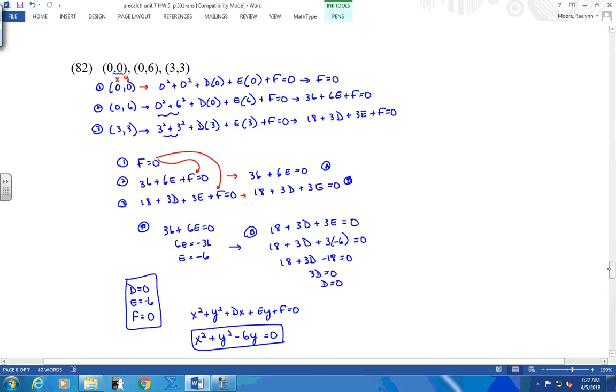This one, this is another nice one because f came out. And then you can work to eliminate the other ones. And again, if you visualize these, here's your zero, zero. Here's your zero, six. Here's your three, three. Oops, sorry. Here's your three, three. Here's your circle like this somewhere.